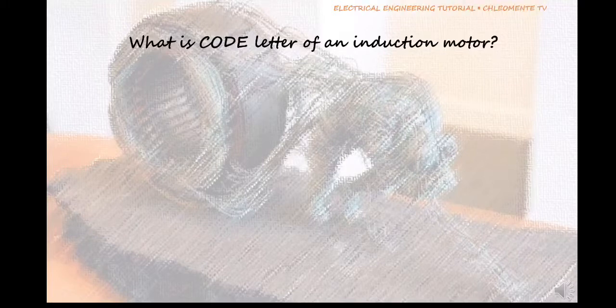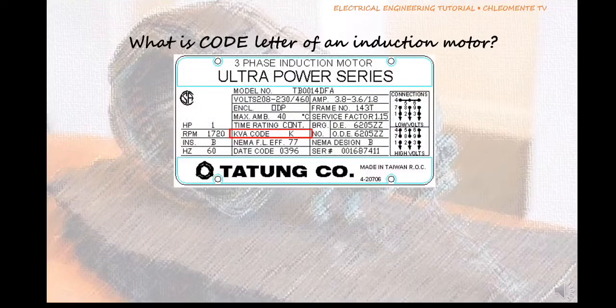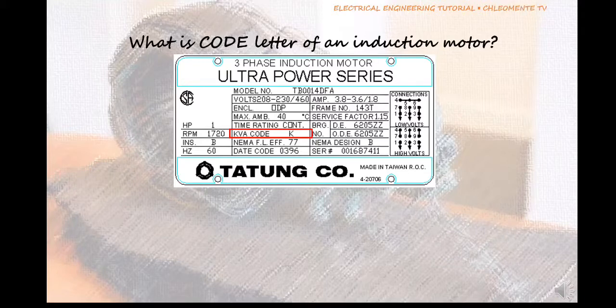So what is the code letter of an induction motor? What is its significance? Where to use it? And why do we need to know it? In this example, the code letter is given in the nameplate of a 1 HP induction motor. The code letter of this motor is letter K. So what does this mean?